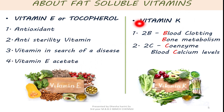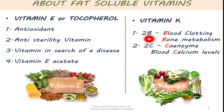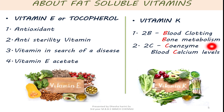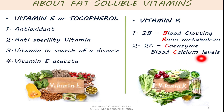Now we will see about vitamin K. The two important points to remember in vitamin K are the two B's and the two C's. The two B's are: it is involved in the blood clotting process and bone metabolism. The two C's are: it serves as a coenzyme and it regulates blood calcium levels.